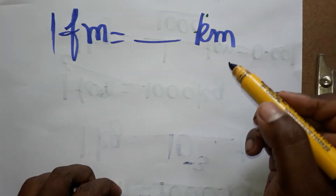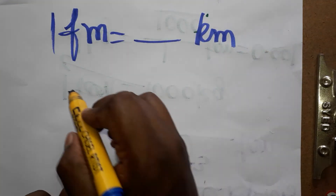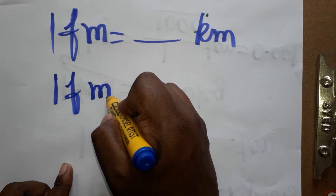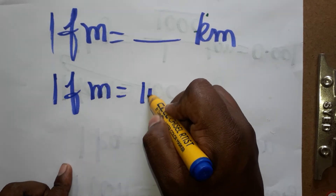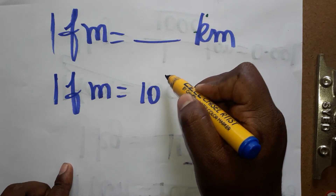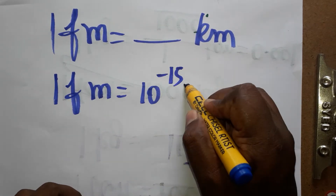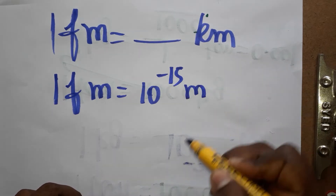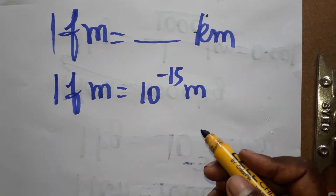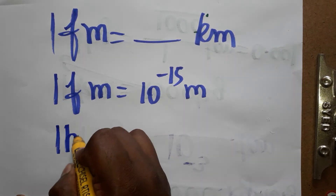Today we are going to learn how to convert femtometer to kilometer. One femtometer is 10 power minus 15 meter.